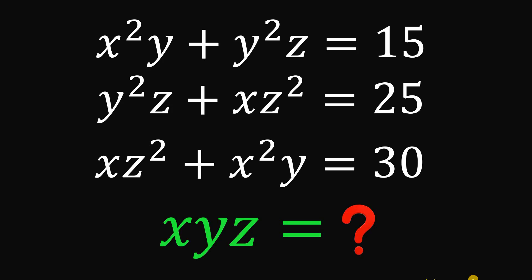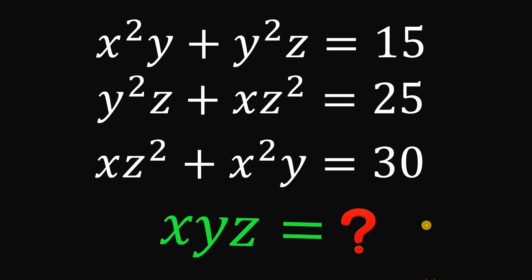Today, we will answer a math challenge given by one of our followers. The question goes like this: given the equation x squared y plus y squared z equals 15, y squared z plus xz squared equals 25, and xz squared plus x squared y equals 30, the goal is to find the numerical value of the product of x, y, and z. Pause this video and see if you can answer this question, because I will show you the solution in 3, 2, 1.